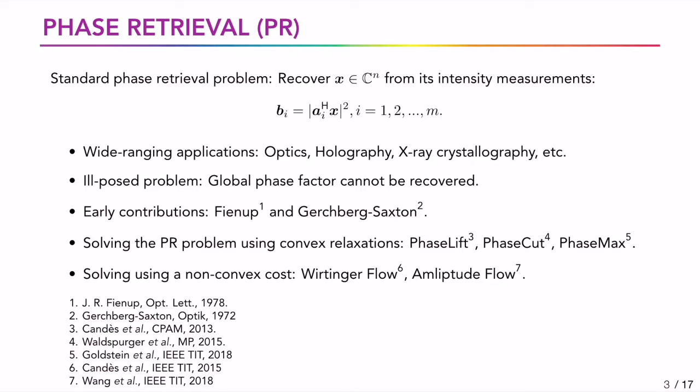Goldstein et al. recently proposed PhaseMax, where they solved the problem by converting the measurement problem to a set of linear inequalities. We can also solve it using a non-convex cost. Candès et al. proposed the least square type cost and solved it using Wirtinger derivatives. A similar approach was used in amplitude flow, but with a faster convergence guarantee. Generally speaking, all these algorithms assume infinite precision.